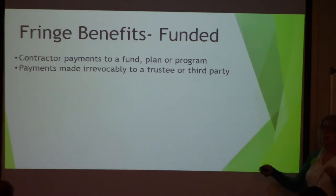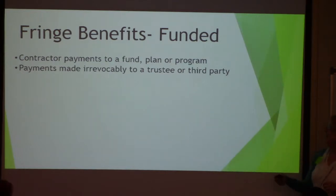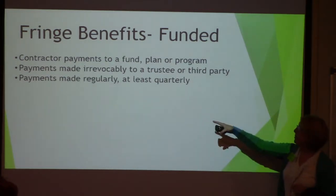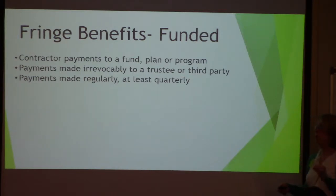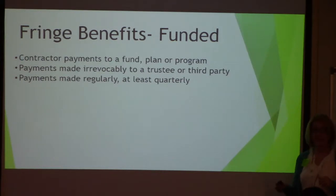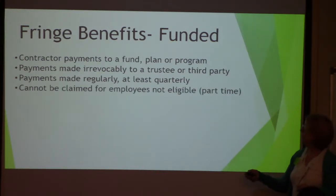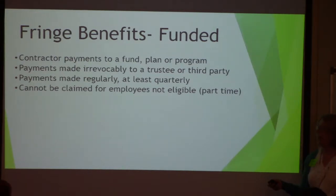For funded fringes, payments are made irrevocably to a trustee or third party. As an employer, you can't just decide one month not to make that pension payment. Payments must be made regularly, at least quarterly. You have to pay those to your trustee or third party at least quarterly.